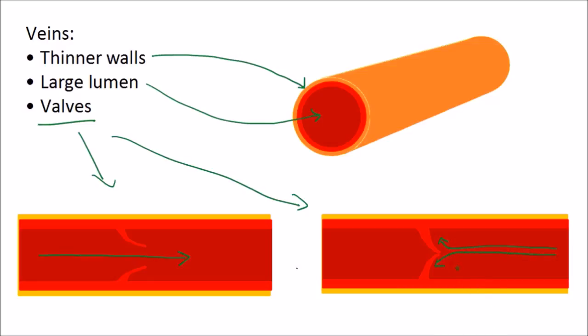So the valves are there to prevent the backflow of blood in the veins, and they need that because the blood is flowing at low pressure. So the blood needs to be kept moving in the correct direction towards the heart.